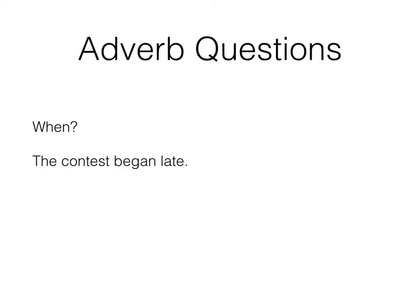How about when? When did it happen? Here we have the sentence: 'The contest began late.' Contest is our subject; began is our verb. Late tells when — it's describing when it began. Because it's describing a verb, late is an adverb.